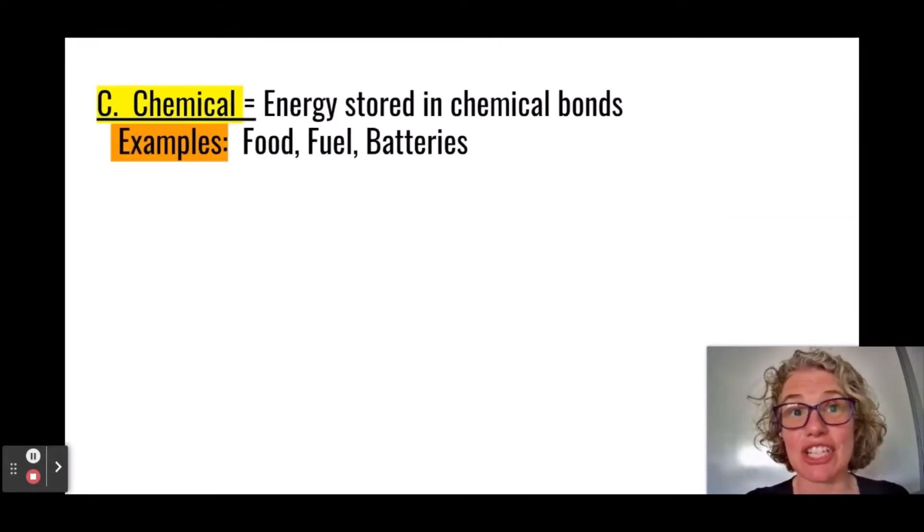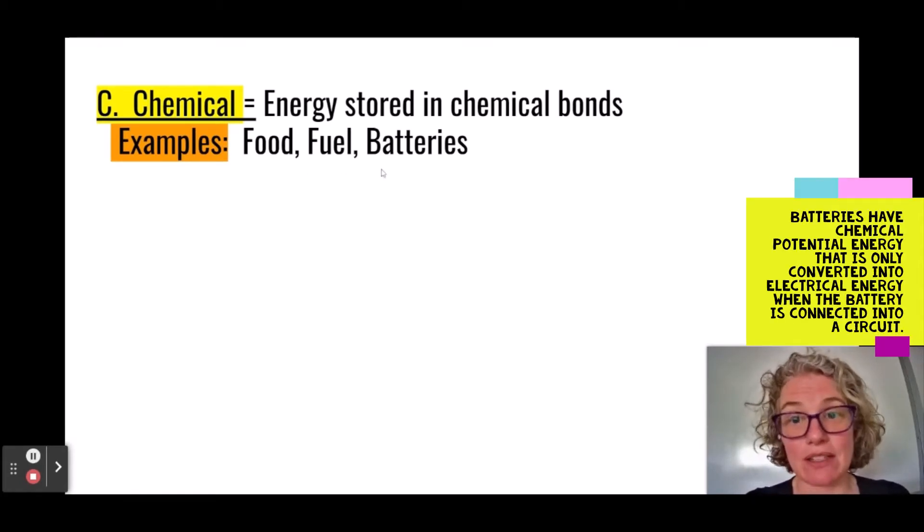Chemical energy. This is the energy stored in the chemical bonds between atoms. Common examples are food, fuel, and batteries. So, basically, anything that we eat in order to get energy, anything that we burn to get energy, like wood and oil and propane, would all be examples of something that has a lot of chemical energy in it.